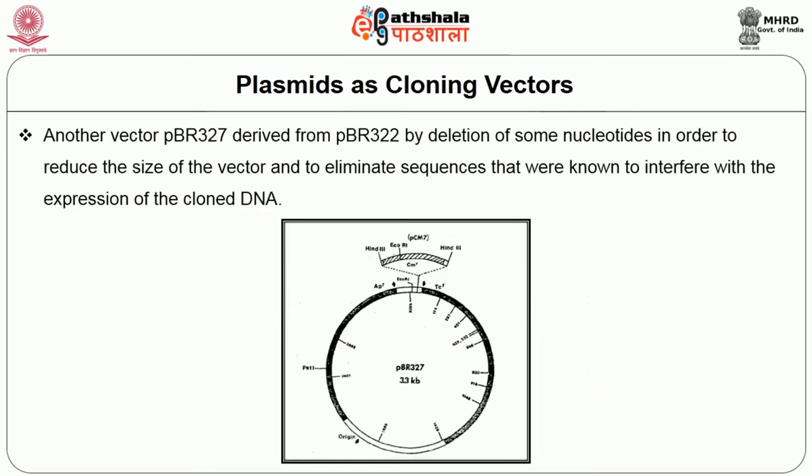Another vector, PBR327, is derived from PBR322 by deletion of some nucleotides to reduce the size of the vector and eliminate sequences known to interfere with expression of the cloned DNA.